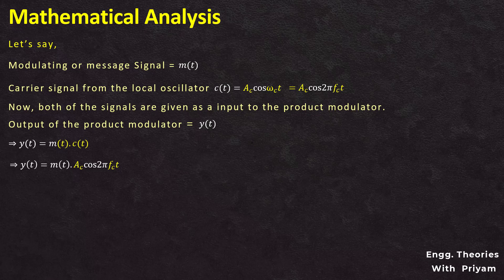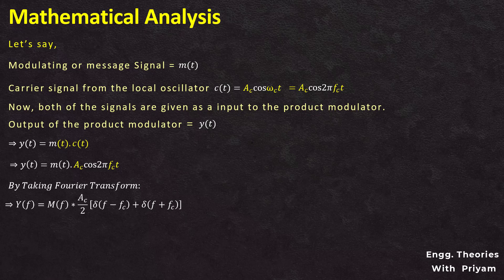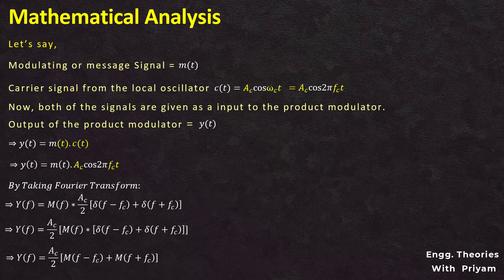In the frequency domain, taking the Fourier transform: Y(F) is obtained from y(t), M(F) from m(t), and the multiplication becomes convolution. The Fourier transform of Ac·cos(2π·fc·t) is (Ac/2)[δ(F−fc) + δ(F+fc)]. Therefore, Y(F) = (Ac/2)[M(F−fc) + M(F+fc)].